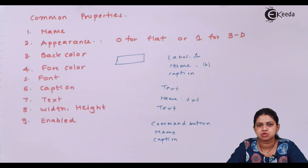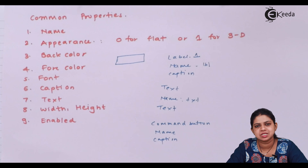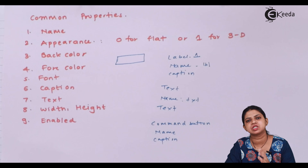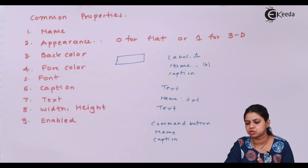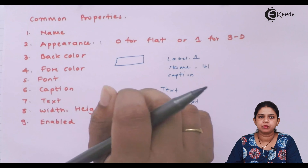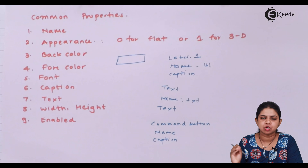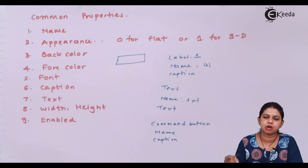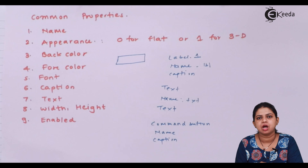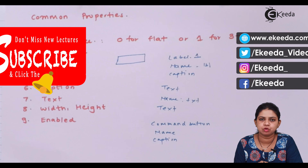For a list box, we use the abbreviation 'lst' to change its name. For combo box, we use 'cbo' (noted as cmd in original, but contextually refers to combo). For option button, we use 'opt'. For check box, we use 'chk'. These are the various abbreviations used while changing the names of the various tools. We have now covered the features of Visual Basic, the common tools and elements used in drawing a Visual Basic application, and the common properties used while dealing with toolbox elements.